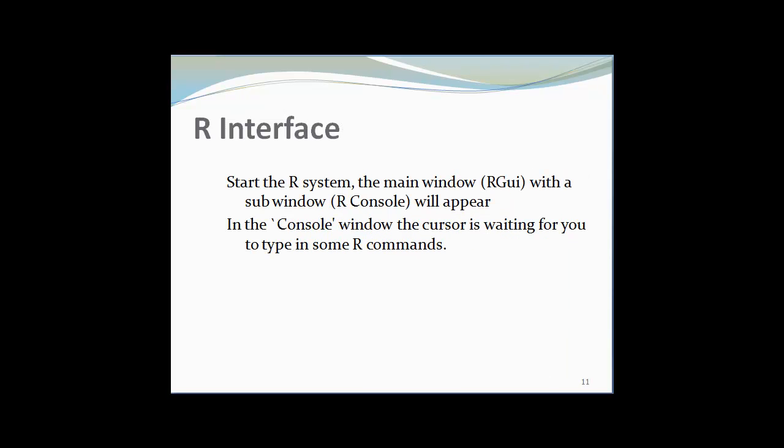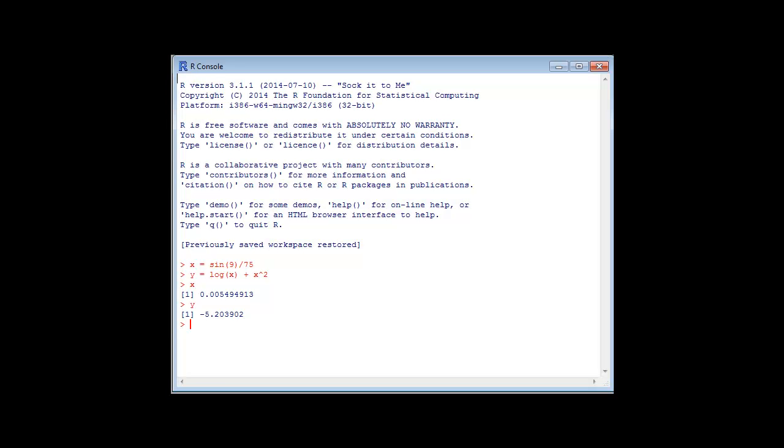Coming towards the R interface: start the R system, the software you downloaded. The main window RGUI with the sub-window R console will appear. In the R console window you will type your commands. Here I have R console window. I can type any command I want, such as x equal to sin of 9 divided by 75 and it is the value of x.